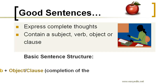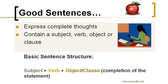Good sentences express complete thoughts and they contain a subject, verb, an object, or a clause — something that will complete the sentence or give it a bit more detail. Here's the basic sentence structure: the subject, followed by the verb, then the object or the words, clauses, and phrases that complete the sentence.